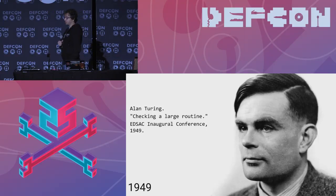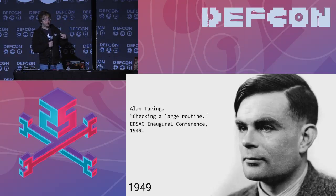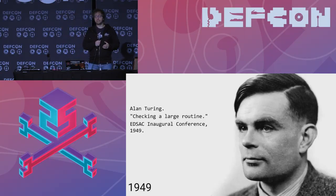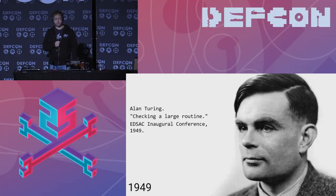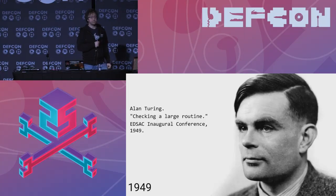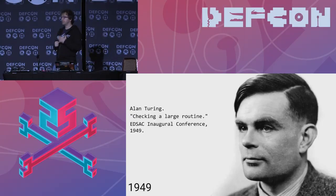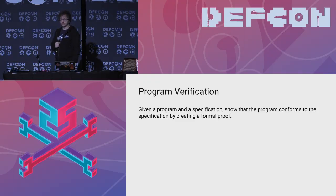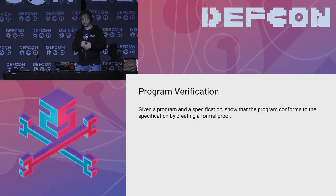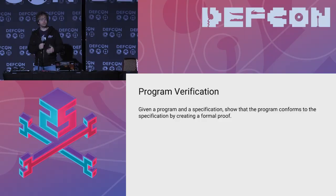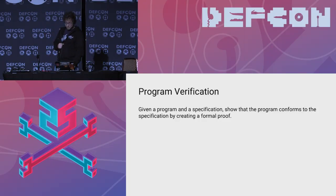One of the early visionaries here was Alan Turing, known of course for the Turing machine and cracking Enigma. He also had the first paper I could find that talked about making sure a program is correct. He published this in 1949 — two years after the invention of the term bug — people start thinking about how to make sure there are no bugs in a program. This creates the field of program verification. Program verification says: given a program and a specification, we want to make sure there are no bugs, that this program carries out the computation it needs to carry out.